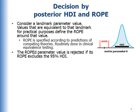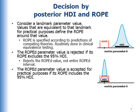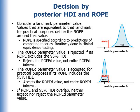The roped parameter value is rejected if its ROPE excludes the 95% HDI, an example of which is depicted on the right. Notice, this rejects the roped value, not the entire roped interval. The roped parameter value is accepted, for practical purposes, if its ROPE includes the 95% HDI, as diagrammed here. This accepts the roped value, not the entire roped interval. If the ROPE and the 95% HDI overlap, then we neither accept nor reject the roped parameter value.